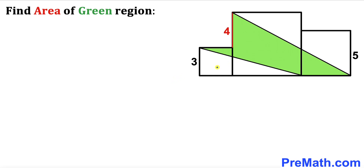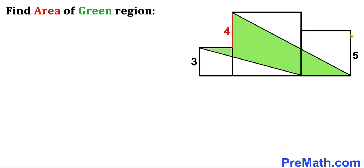Welcome to Pre-Math. In this video we have three squares of various dimensions put together, and a green shaded shape wedged between these squares. The height of one square is three units, the height of another is five units, and the height difference between them is four units. Our task is to calculate the area of this green shaded region.